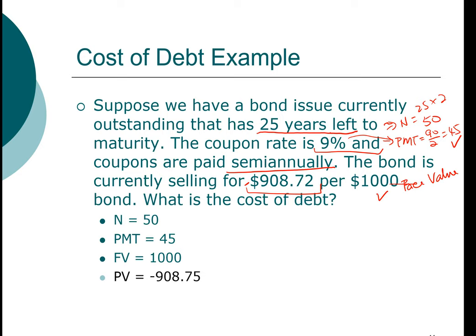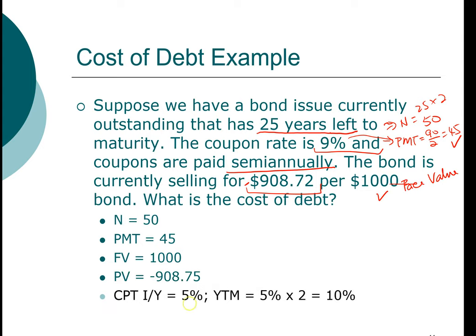When you compute the yield to maturity, it turns out to be 5%. But because this is a semi-annual bond, that means it is 10% per year. If you need to review this further, please pause the video and go through the calculation to make sure that you remember how to do all the calculations.